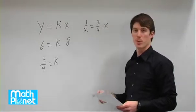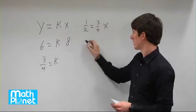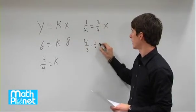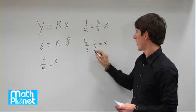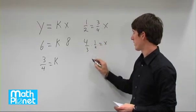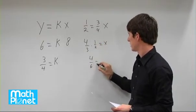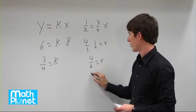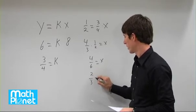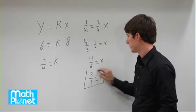We just multiply both sides by 4 thirds. 4 thirds times 1 half equals x. So x is equal to 4 divided by 6, or 2 divided by 3. So x is equal to 2 thirds.